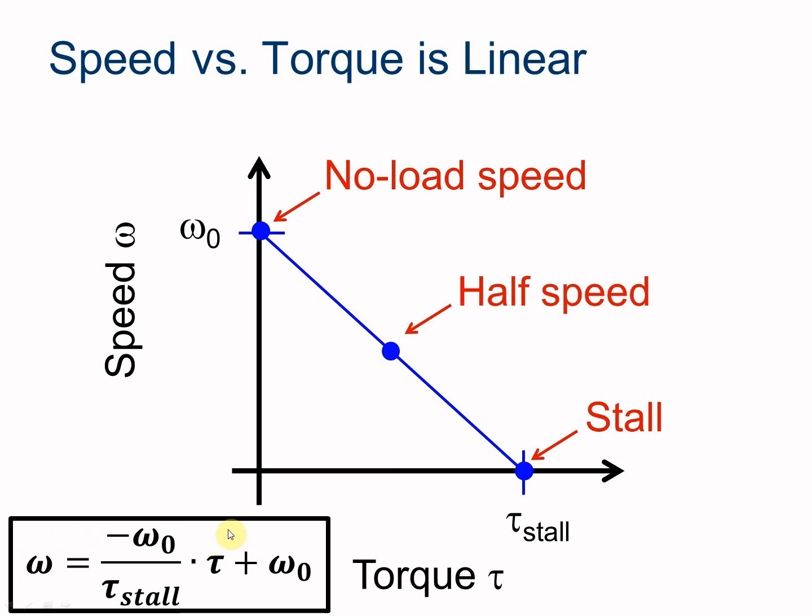y equals mx, where the x-axis is torque, so we put a tau here. And of course, then we have to add b to that. b is the y-intercept, which is omega naught. So using the equation for a line, we get omega equals negative omega naught over tau stall times tau plus omega naught. Our angular velocity equals the negative no load speed divided by the stall torque times the amount of torque that we have at any given point, and then we add that to our no load speed.